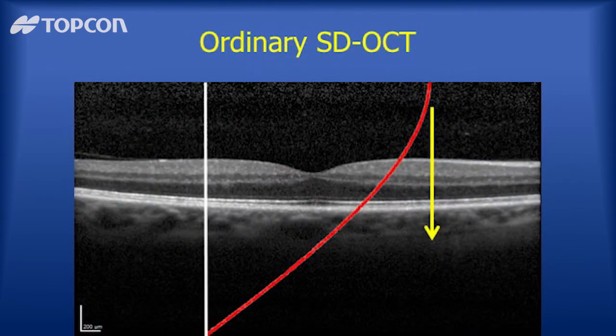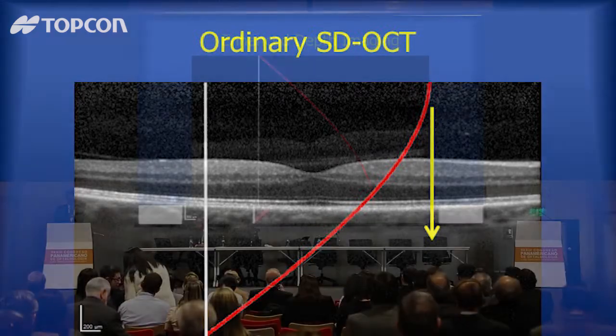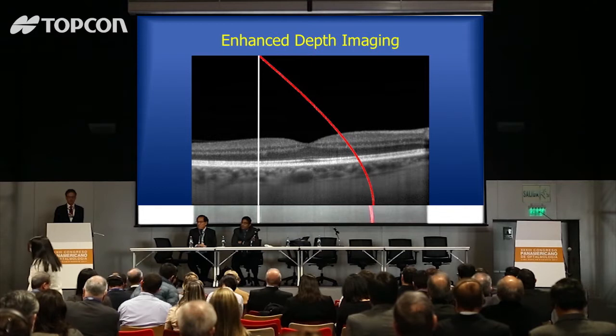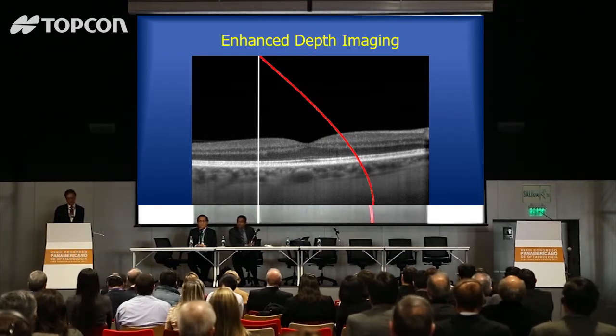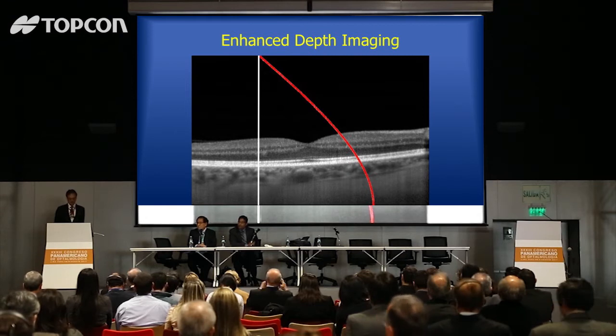Ordinarily in spectral domain OCT, the peak sensitivity is placed in the vitreous because the vitreous is clear and hard to image. You can see the curve falls off in the choroid, which is part of the reason why the choroid appears dark in spectral domain OCT. We can invert that curve and push it backwards so that the peak sensitivity is near the sclera — that's the basis of enhanced depth imaging, or EDI OCT.